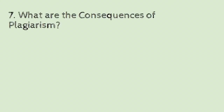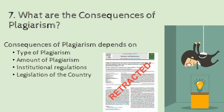The last question: what are the consequences of plagiarism? The consequences depend on the type of plagiarism, the amount of plagiarism, institutional regulations, and the legislation of the country. If a journal finds that your article is plagiarized, they will issue a retraction from that journal. Institutional regulations may demand loss of your job. Legislation of the country may demand imprisonment and a fine.